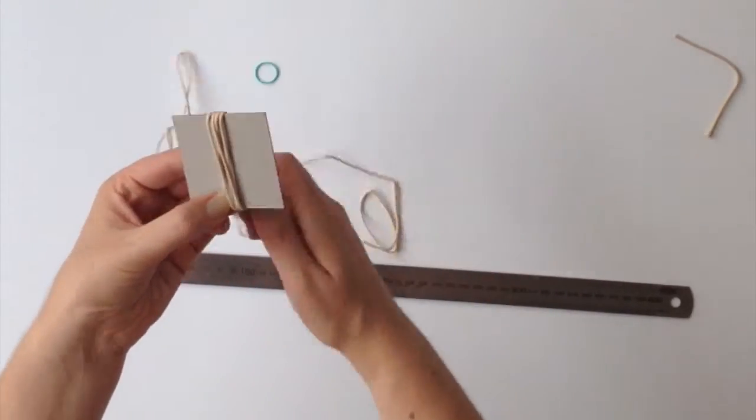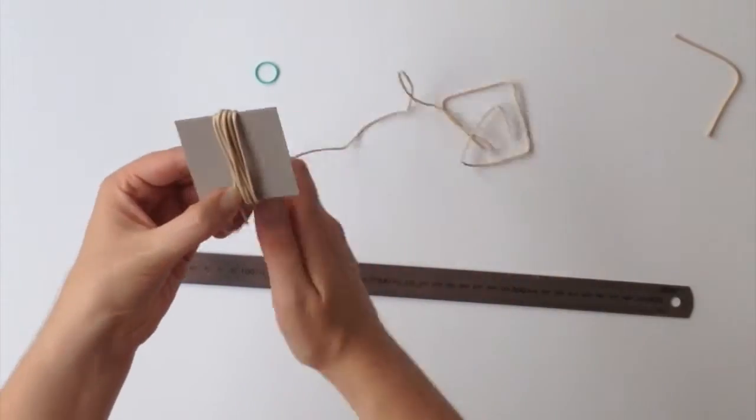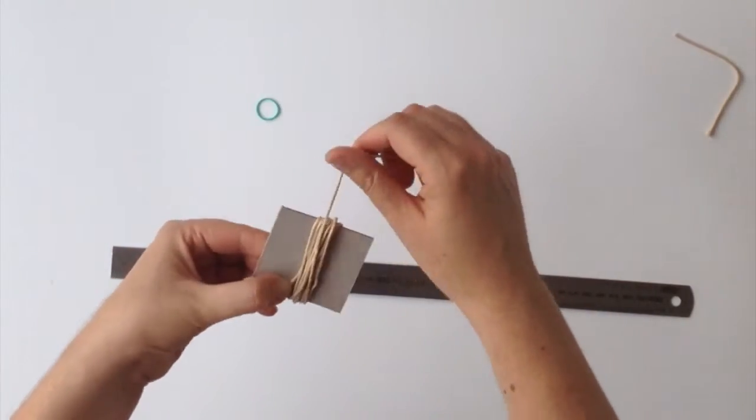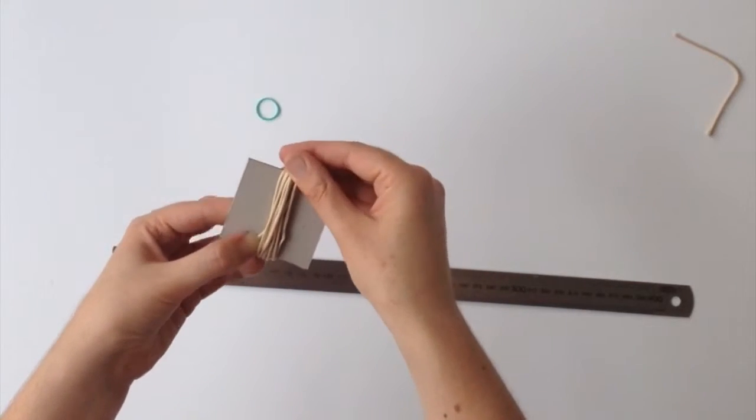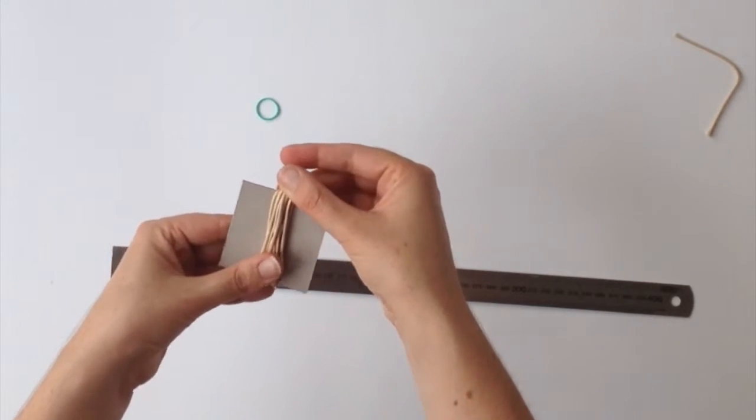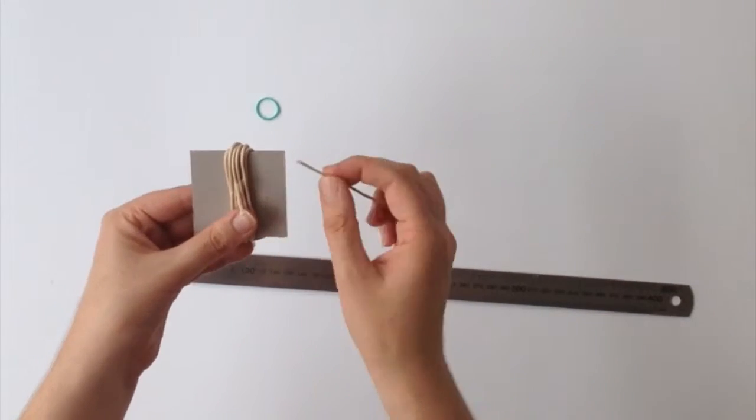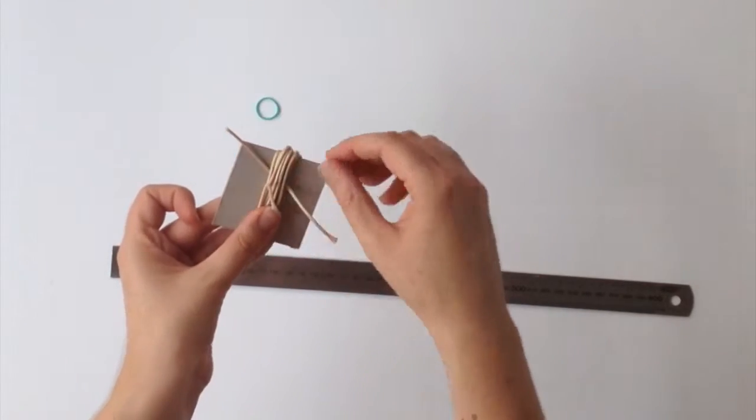You don't have to do it too tight. Make sure it's out flat. When you get to that point, you thread your 10cm piece between the cardboard and the rope.